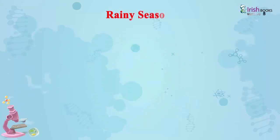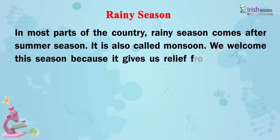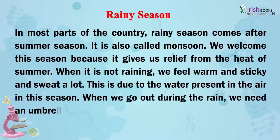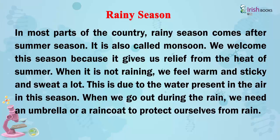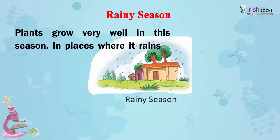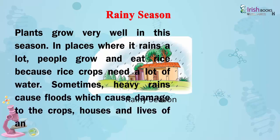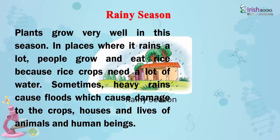Rainy Season. In most parts of the country, the rainy season comes after summer. It is also called monsoon. We welcome this season because it gives us relief from the heat of summer. When it is not raining, we feel warm and sticky and sweat a lot due to the water present in the air. We need an umbrella or raincoat to protect ourselves from rain. Plants grow very well in this season. In places where it rains a lot, people grow and eat rice because rice crops need a lot of water. Sometimes, heavy rains cause floods which damage crops, houses, and the lives of animals and human beings.